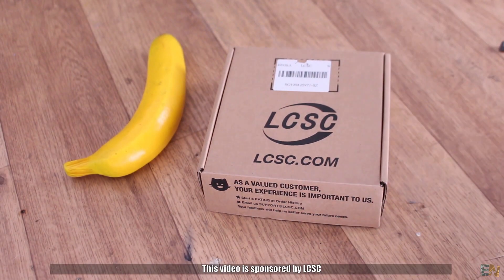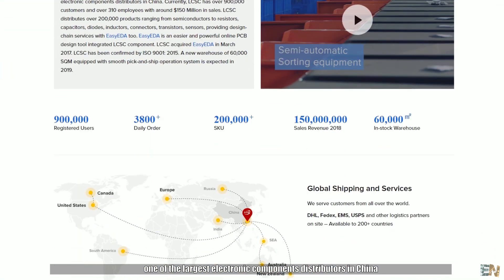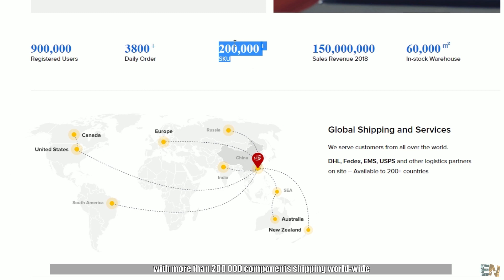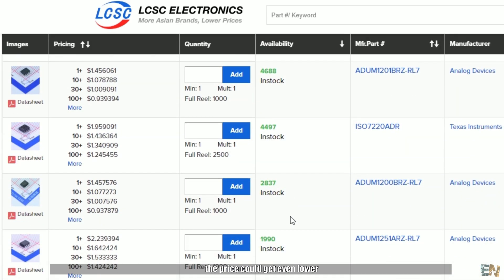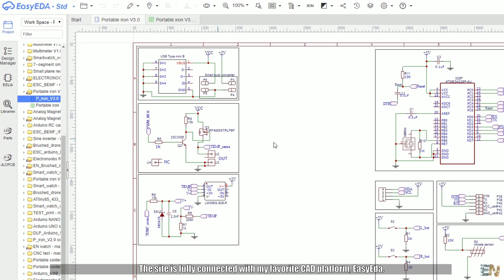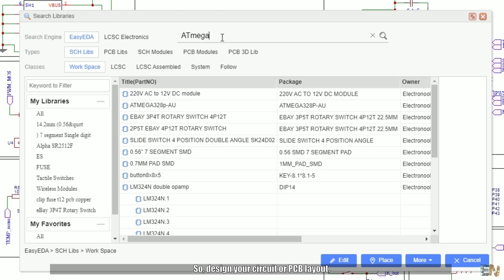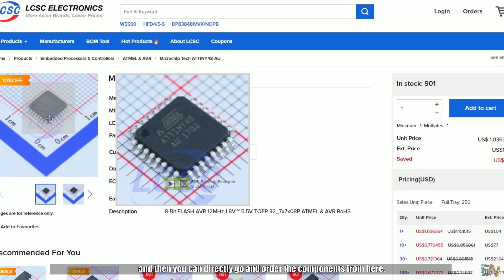This video is sponsored by LCSC, one of the largest electronic components distributor in China with more than 200,000 components shipping worldwide. Their prices are very low and if you buy more components, the price could get even lower. The site is fully connected with my favorite CAD platform, Easy EDA. So design your circuit or PCB layout and then you can directly go and order the components from here.